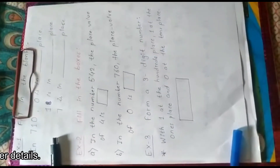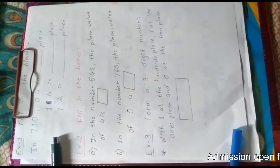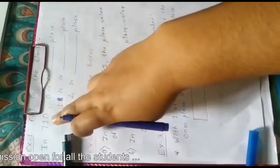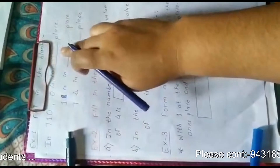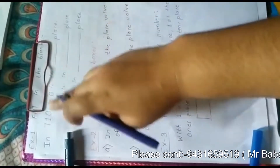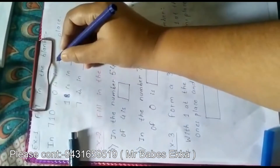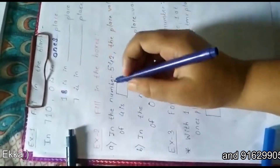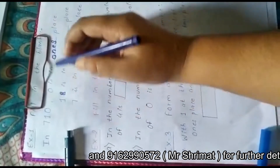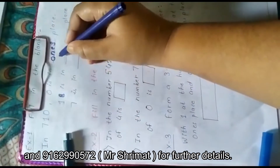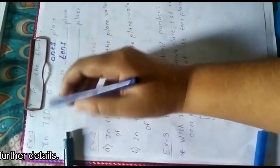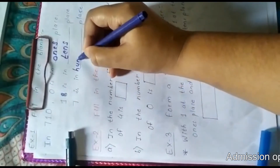After discussing many topics, we will solve some examples. Our first example is fill in the blanks. In 710: zero is in ones place, so you will write 'ones'; one is in tens place, so you will write 'tens'; and 7 is in hundreds place, so you will write 'hundreds'.